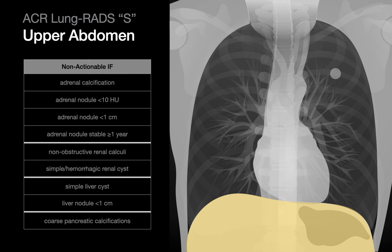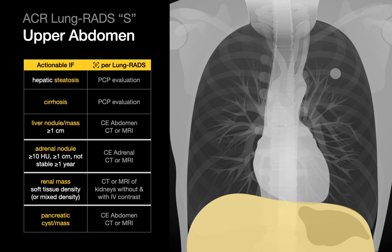In the upper abdomen, a moderately long list of adrenal, kidney, liver, and pancreatic incidental findings are defined as non-actionable, while hepatic steatosis, cirrhosis, liver lesions 1 cm and above, adrenal nodules that are above 10 Hounsfield units of attenuation, 1 cm, or have been growing, renal masses of soft tissue or mixed density, and pancreatic cysts and masses may be actionable.